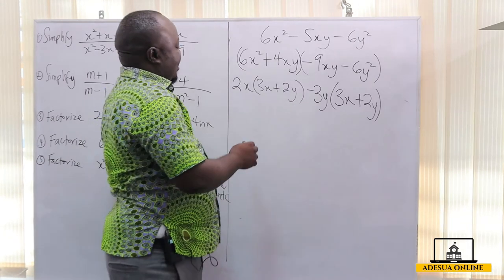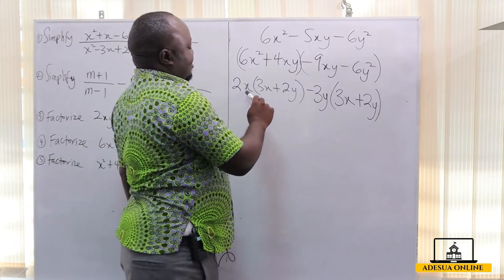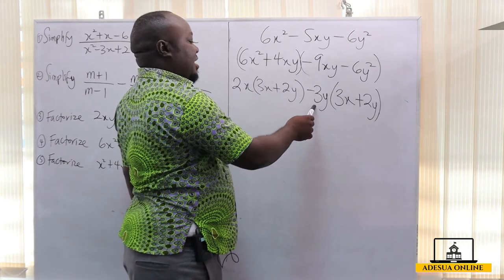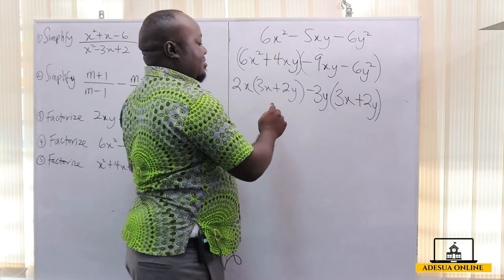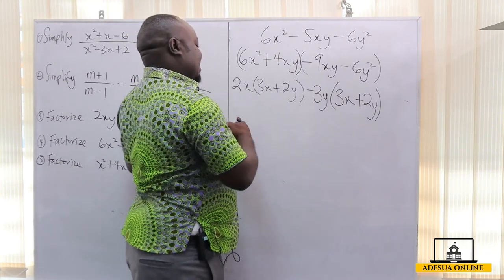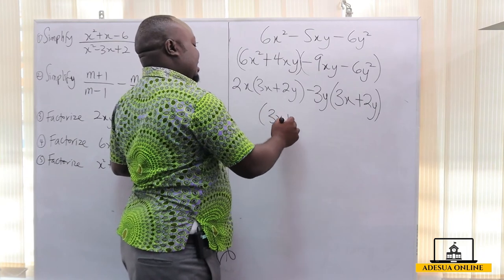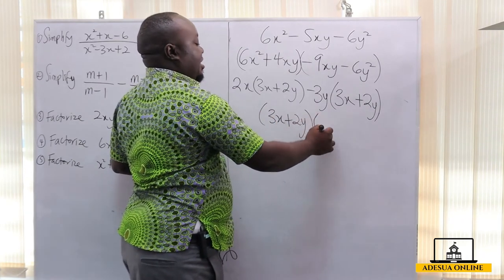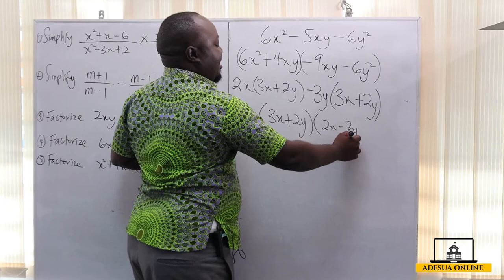So the expression 6x² - 5xy - 6y² factors as (3x + 2y)(2x - 3y).